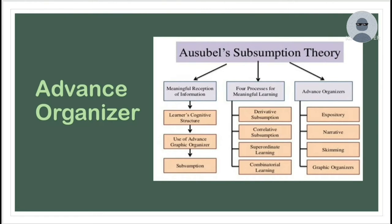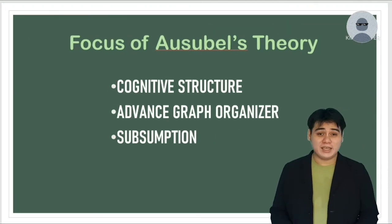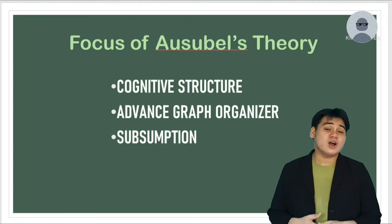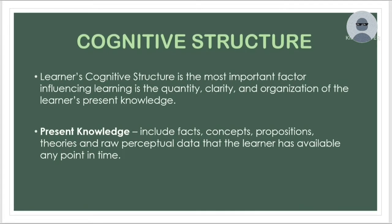Also, this theory contains meaningful verbal learning, and as you can see, this will be the outline of our discussion for today. The first discussion is about the focus of Ausubel's theory — cognitive structure. The most important factor influencing learning is the quantity, clarity, and organization of the learner's present knowledge.